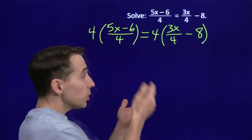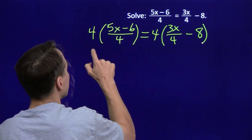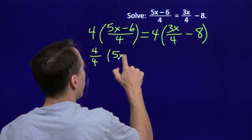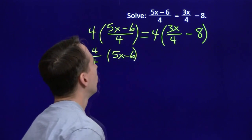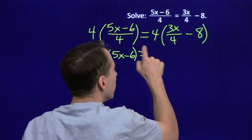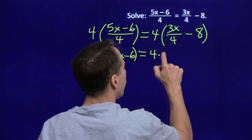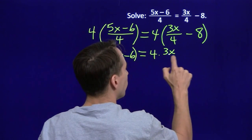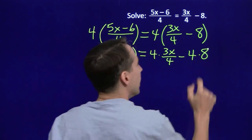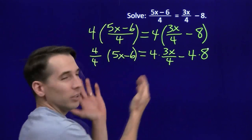Now over here, the reason we can cancel here and knock out the fractions is I can rewrite this as 4 over 4 times 5x minus 6. Now over here, I have to do something a little bit different. I've got to distribute here. When I multiply this out, I have 4 times 3x over 4 minus 4 times 8. And you can see I've got something different going on on these two sides.